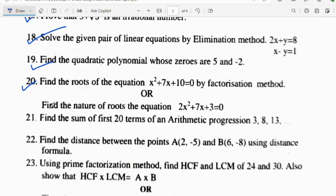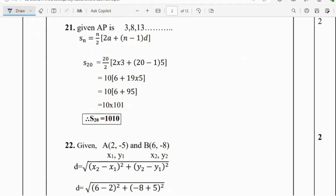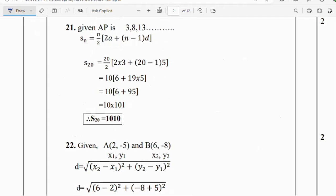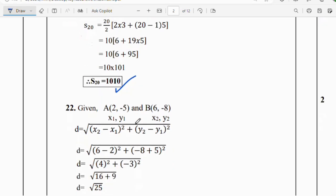Question number 21: Find the sum of first 20 terms of an arithmetic progression 3, 8, 13. We have to find out S_n. In the given AP, a is 3, d is 5, n is 20. Substituting in the equation S_n = n/2 into (2a + (n-1)d). 20/2(2×3 + 19×5). 19 into 5 is 95. 2 into 3 is 6. 10 into 101 is 1010. So S_20 equals 1010.